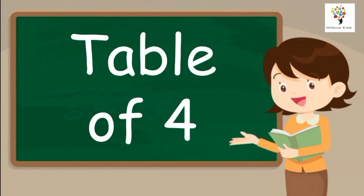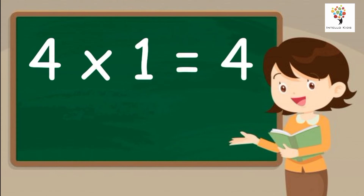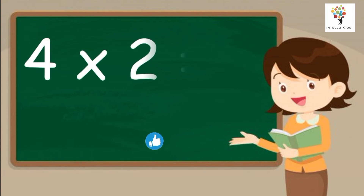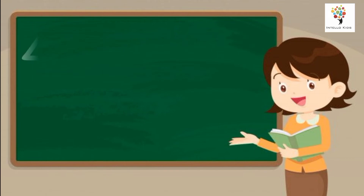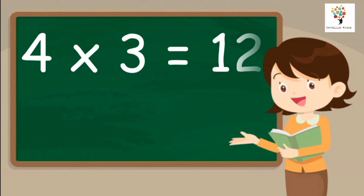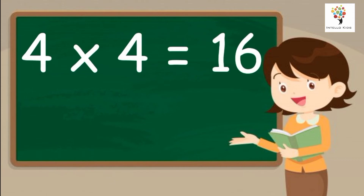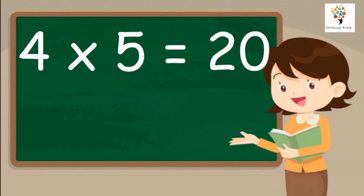Table of Four. Four ones are four. Four twos are eight. Four threes are twelve. Four fours are sixteen. Four fives are twenty. Four sixes are twenty-four.